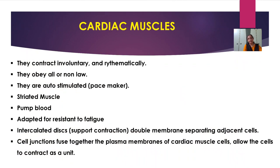Friends, we have studied the first type of muscle — skeletal muscle — its hierarchy, structure, and functions. Now the second type of muscle is cardiac muscle. Cardiac muscle contracts involuntarily and rhythmically. They obey the all-or-none law. They are auto-stimulated, that is, they have a pacemaker.